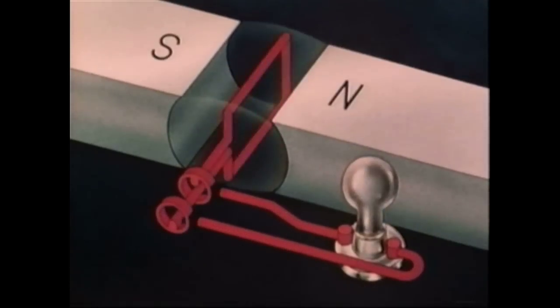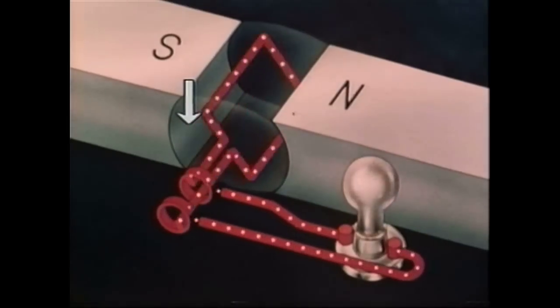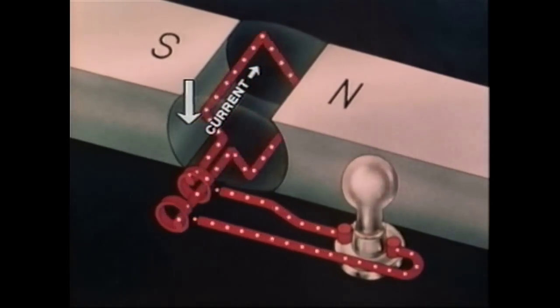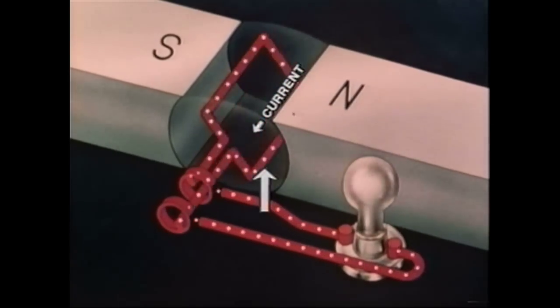This occurs twice in each revolution. Notice, as the coil rotates, one of its sides cuts downward through the magnetic field, causing current to be induced in one direction, while the other side is moving upward, inducing current in the opposite direction.